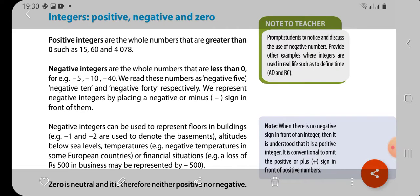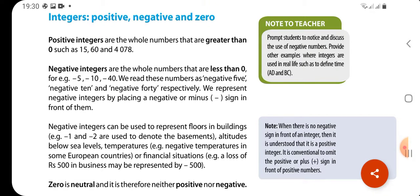Today we will talk about integers. There are positive integers and negative integers and 0. Positive integers are numbers greater than 0. Negative integers are less than 0. 0 is neutral. It is neither positive nor negative.